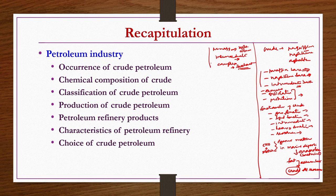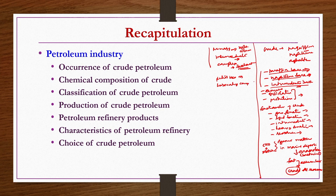We also discussed choice of crude — if you want more petrol-like products, go for paraffin base crude; if you want lubricating compounds and waxes, go for naphtha base crude; and if you want both, go for intermediate base crude. Such considerations regarding choice of crude petroleum were also discussed.